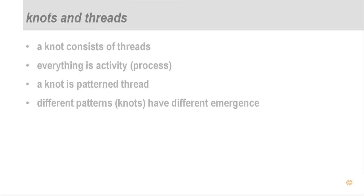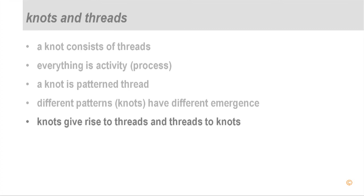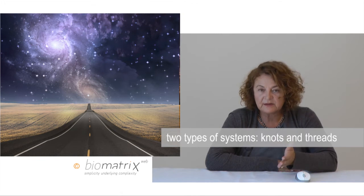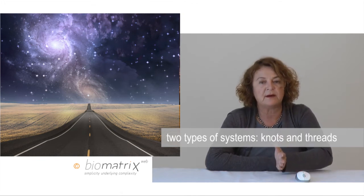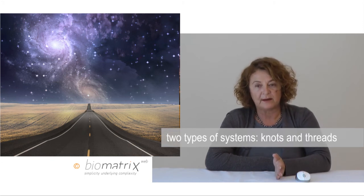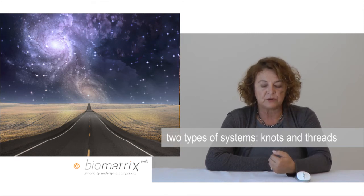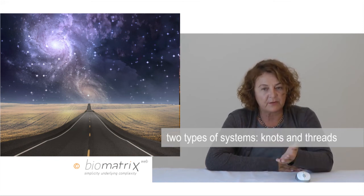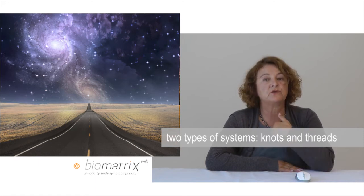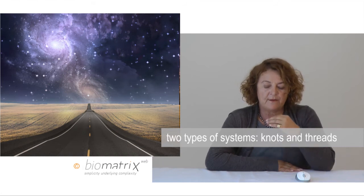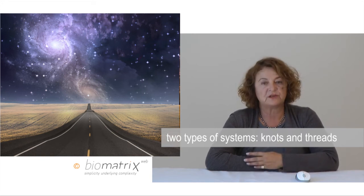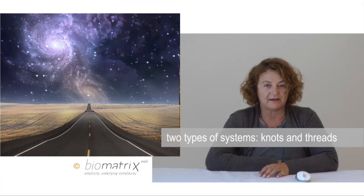Another principle we can deduce is that knots give rise to threads and threads give rise to knots. In other words, I as a person give rise to a particular activity system — my specific work life — but at the same time the thread also influences how I as a person unfold and develop. So I give rise to my work life, but my work life also gives rise to me as a person. We have principles within the biometrics that can be deduced from how knots and threads are organized in a fishing net.